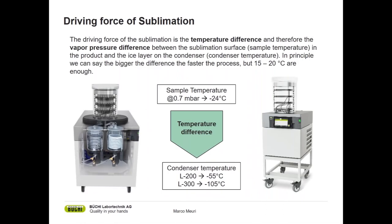The pressure is used in the range of one millibar down to 0.03 millibar, depending on the sample temperature we want to achieve. The sample temperature is important because the driving force of sublimation is the temperature difference between the condenser — in the actual freeze dryer — and the sample temperature. The sample in the freeze dryer sits on top, either in a chamber or attached as a manifold.